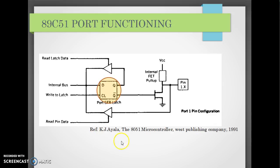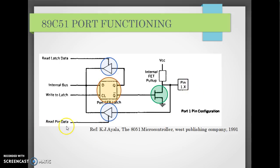This is the typical port configuration. We have a D-Latch, and then there are two buffers — one latch to read the output of the D-Latch, and another latch to read the pin status. These two latches are under the control of pin instructions. According to the instruction, either we read the internal latch or the pin status.